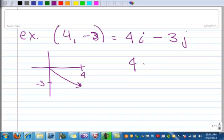Or you could write 4i plus negative 3j. So that's i, j form.